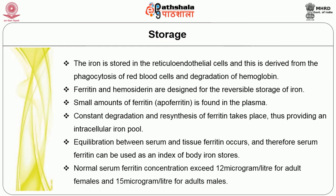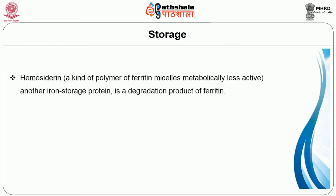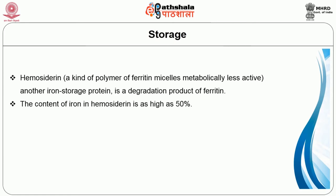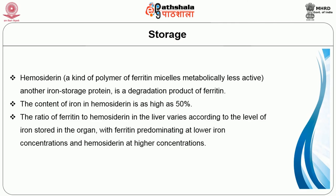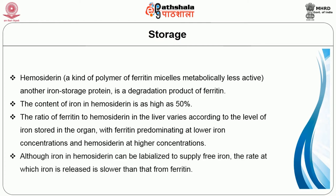Normal serum ferritin concentration exceeds 12 microgram per liter for adult females and 15 microgram per liter for adult males. Hemosiderin is a polymer of ferritin micelles, metabolically less active, and is a degradation product of ferritin. The iron content in hemosiderin is as high as 50%. The ratio of ferritin to hemosiderin in the liver varies with iron levels — ferritin predominates at lower iron concentrations and hemosiderin at higher concentrations. Although iron in hemosiderin can be released, the rate is slower compared to ferritin.